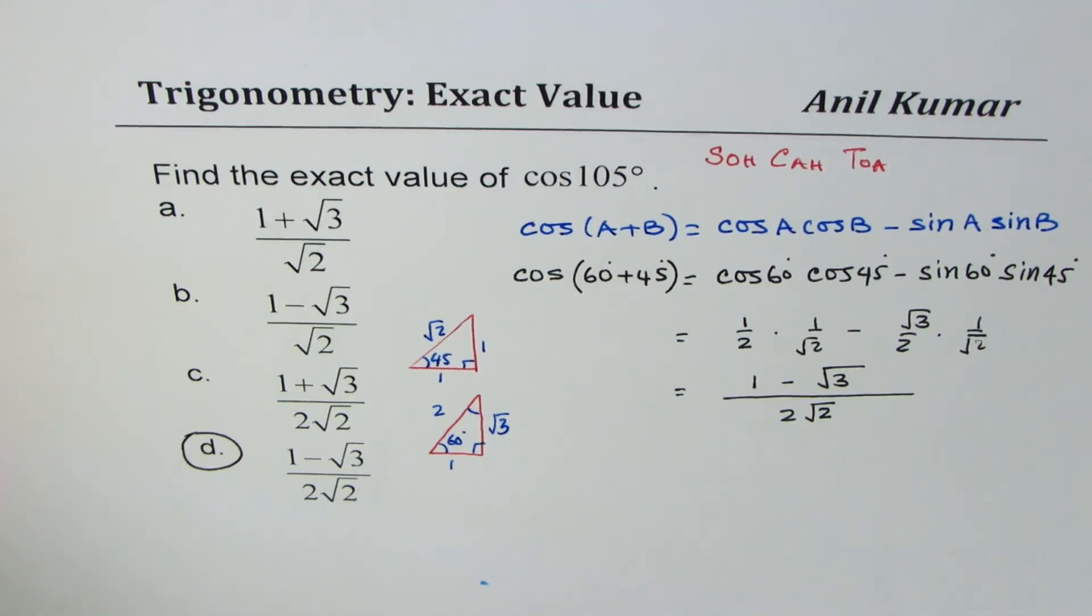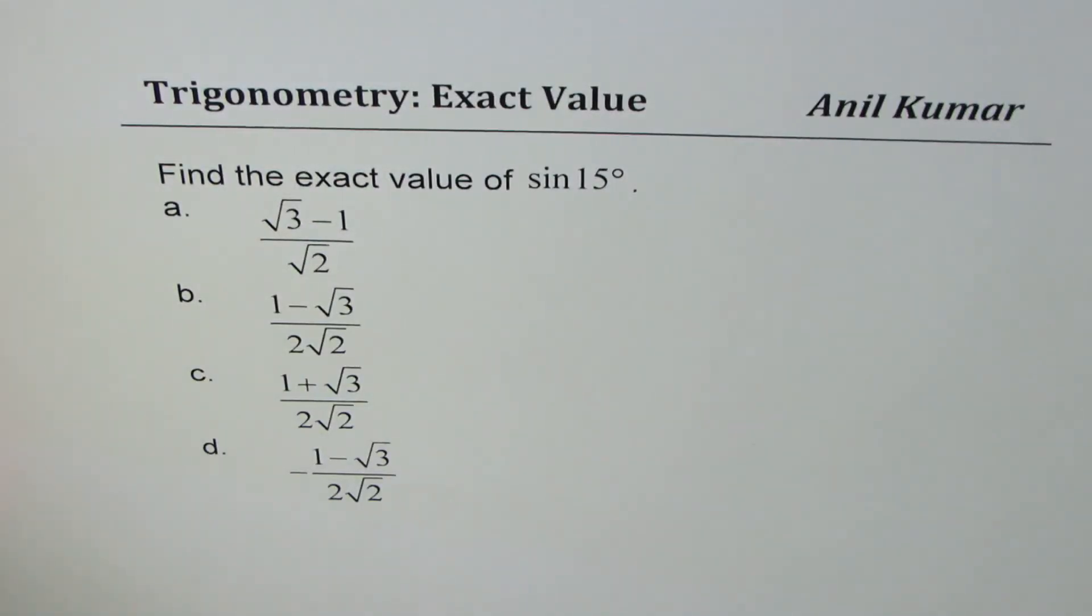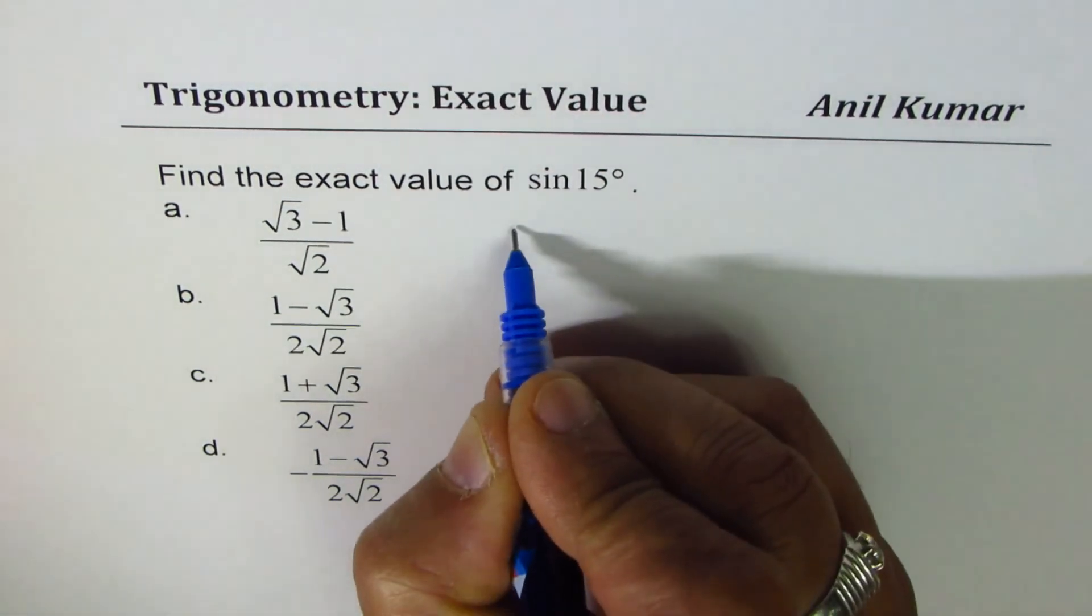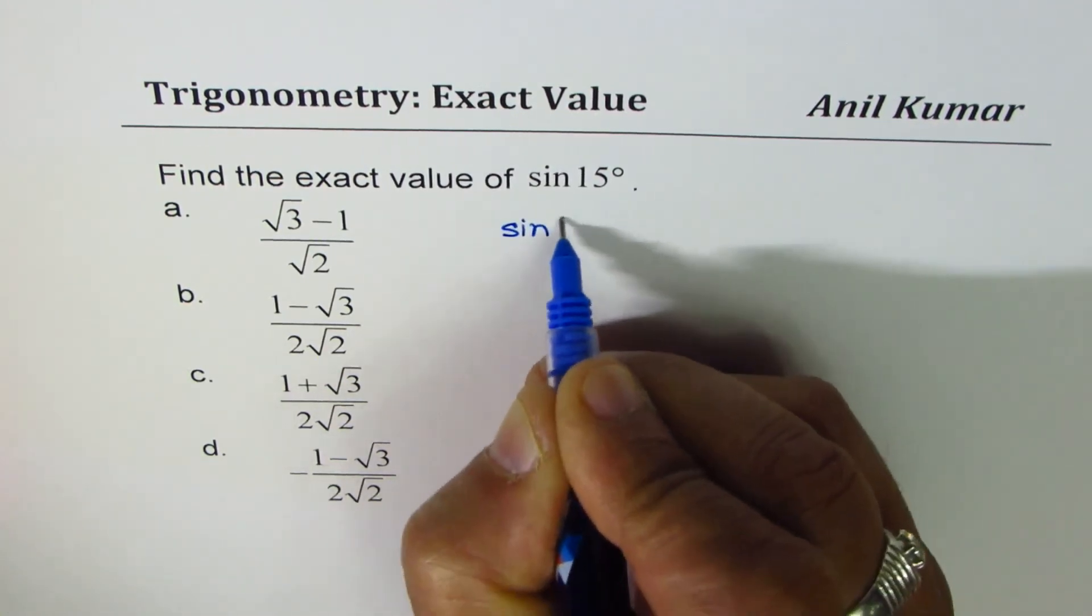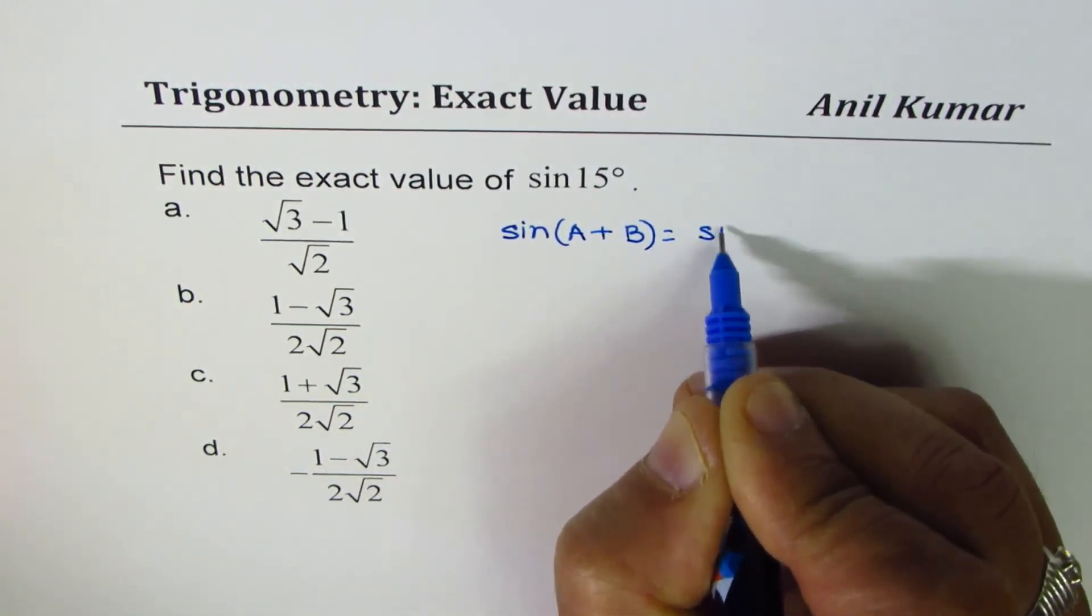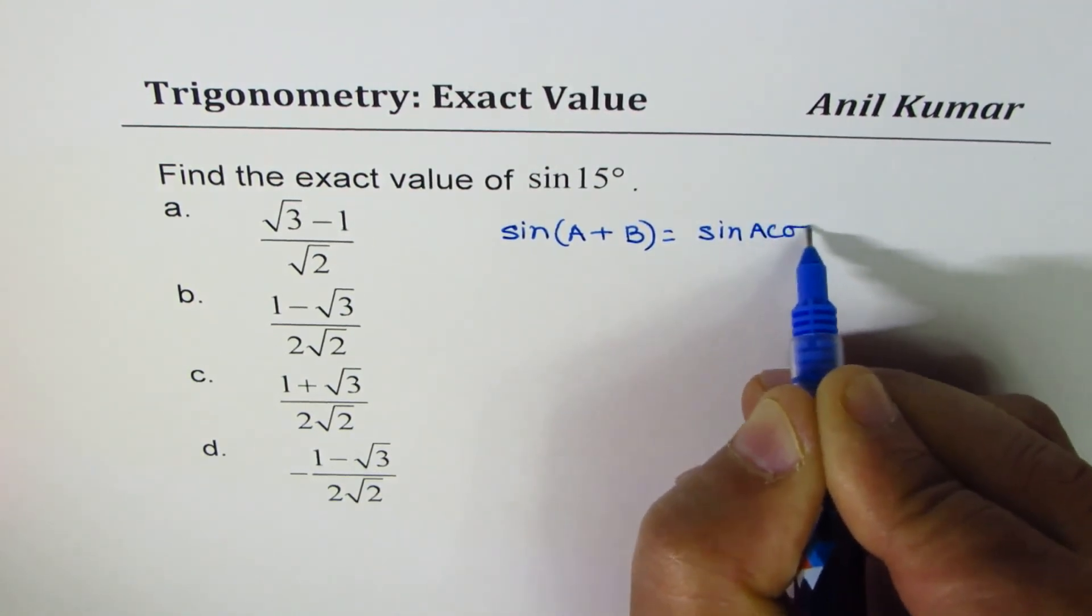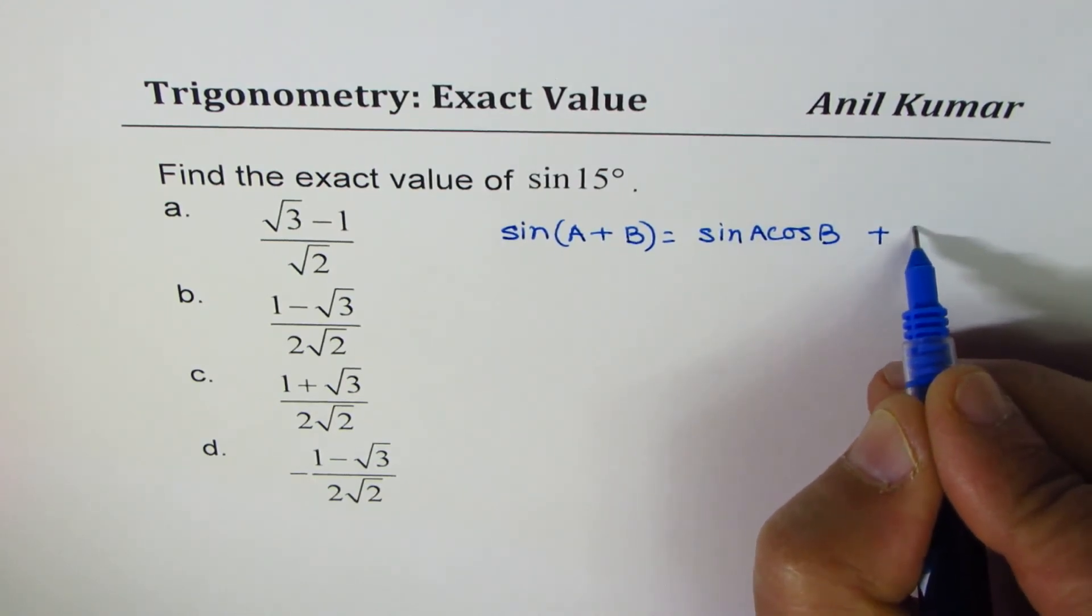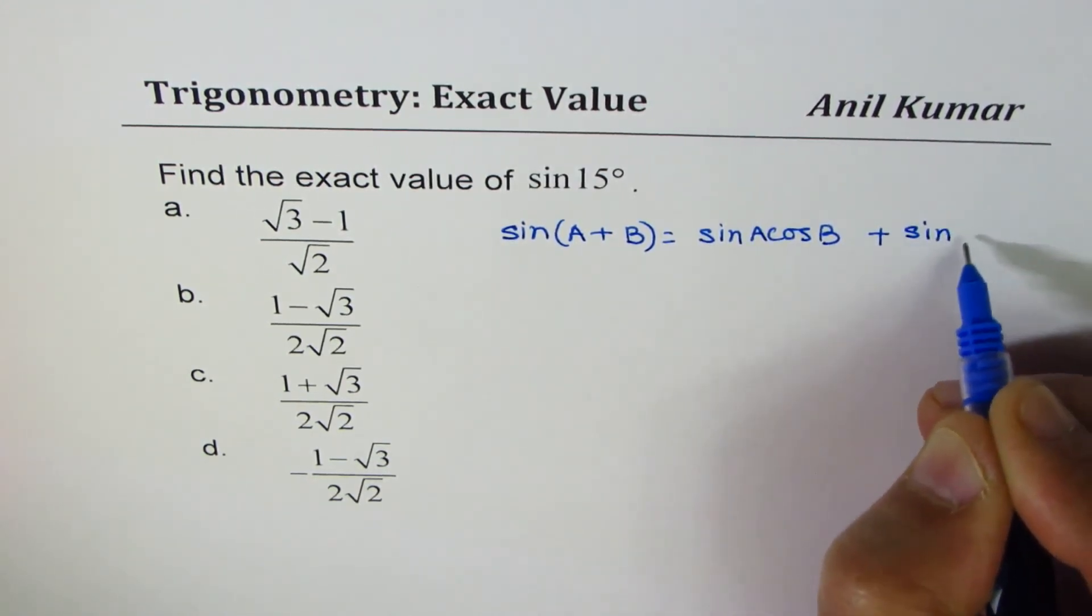Now let's go to the test question on the same. This time this question is for you. Find the exact value of sin 15 degrees. You may use this formula which is sin(A + B), which is sin A cos B. When it is plus, it is plus here also: sin B cos A.